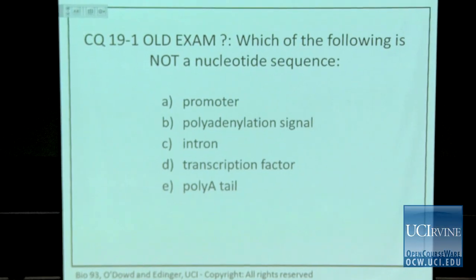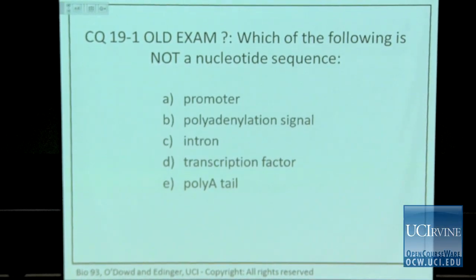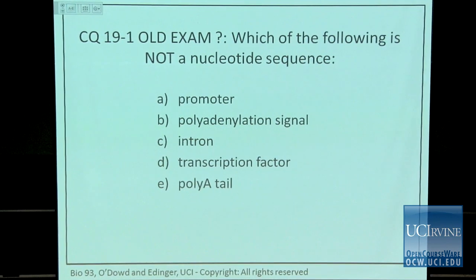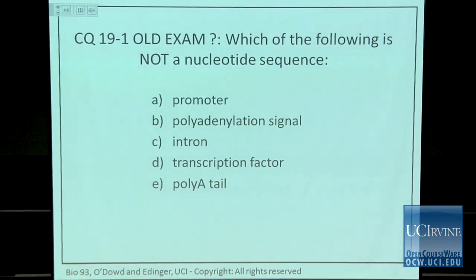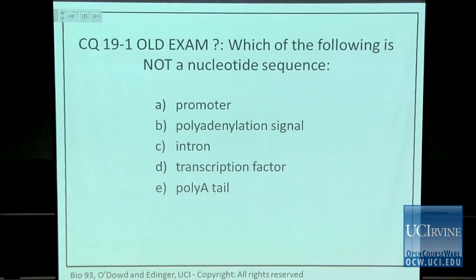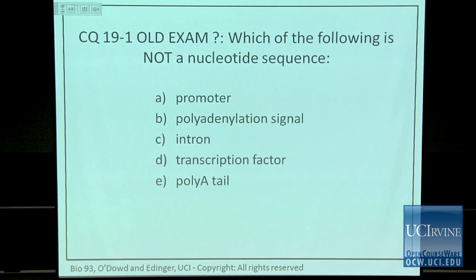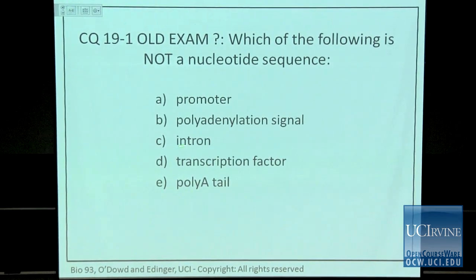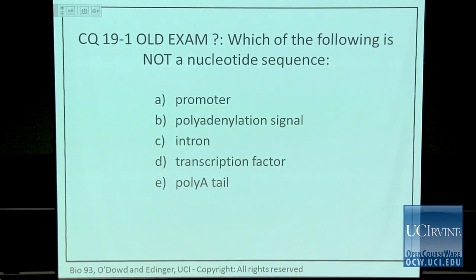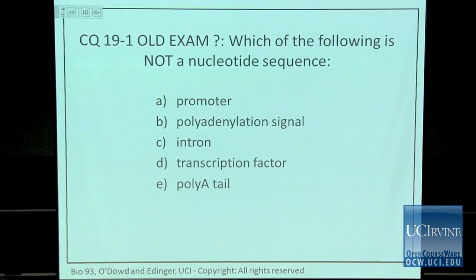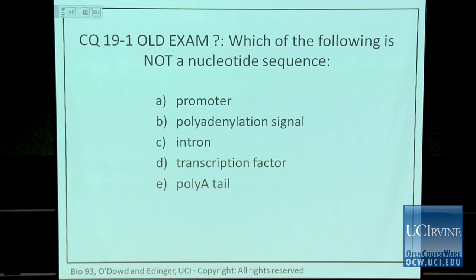What about an intron? Where do you find an intron? Maybe pre-mRNA, or the primary transcripts. Or you can have the corresponding sequence of the intron in the DNA, but this is also a sequence. Transcription factor is the correct answer. What kind of molecule is a transcription factor? Protein. That's right. So the answer is D.